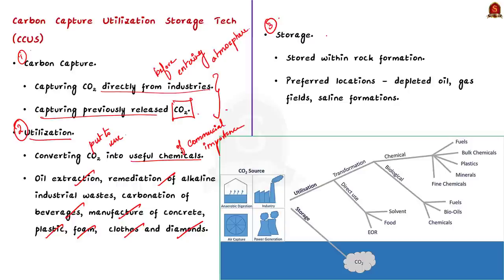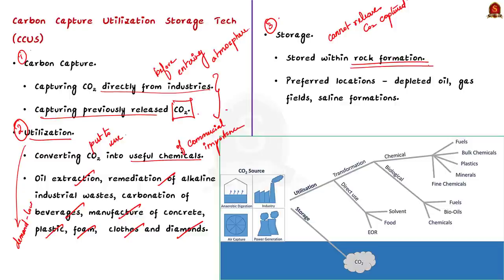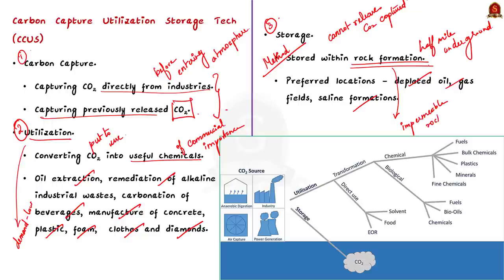The last step is storage. Currently, the demand for utilization of carbon dioxide is very low. So the excess captured carbon dioxide must be safely stored so it does not enter back into the atmosphere. The most common storage technology is storing CO₂ within rock formations over half a mile underground. Depleted oil or gas fields or saline formations are mostly used. These sites are chosen because they have impermeable cap rock, which acts as a seal to contain the carbon dioxide permanently.